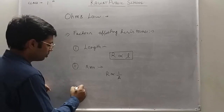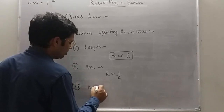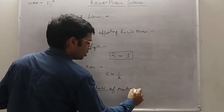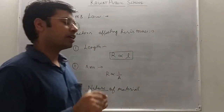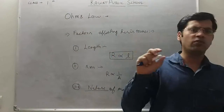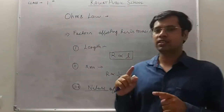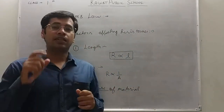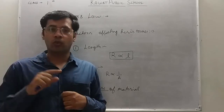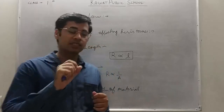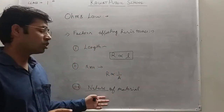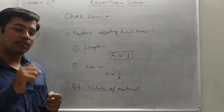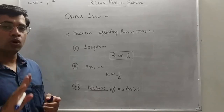A third factor is that resistance depends on the nature of the material — whether it is a conductor, insulator, or semiconductor. For example, Nichrome has a resistance 60 times that of copper. That means resistance depends on the nature of the material. Nichrome is of a different nature than copper, and Nichrome has 60 times more resistance compared to copper.